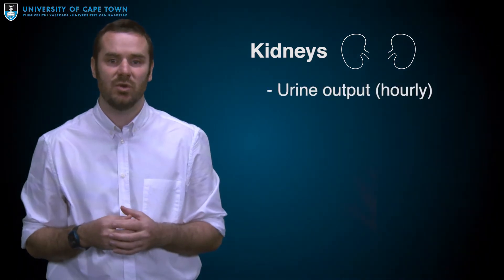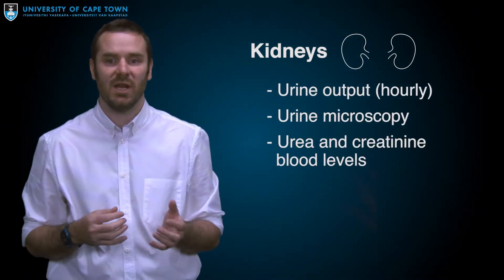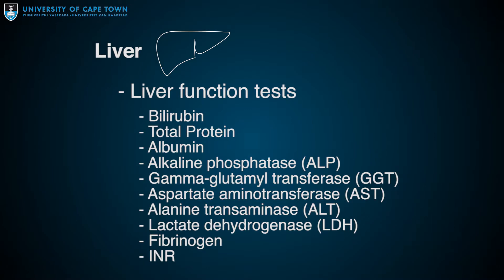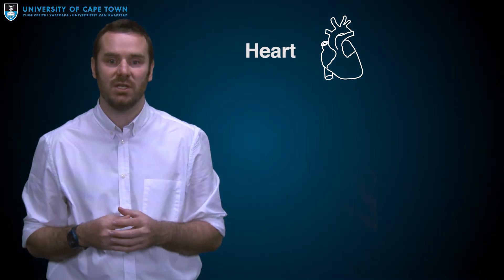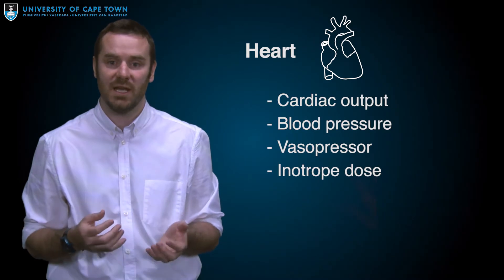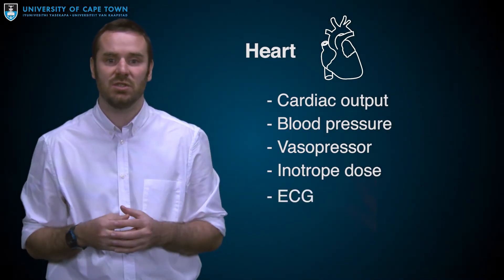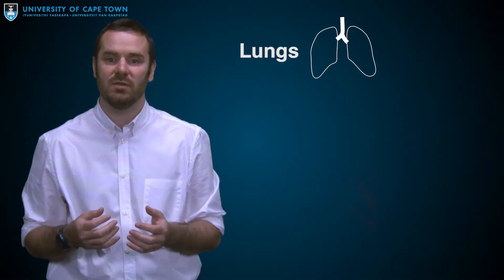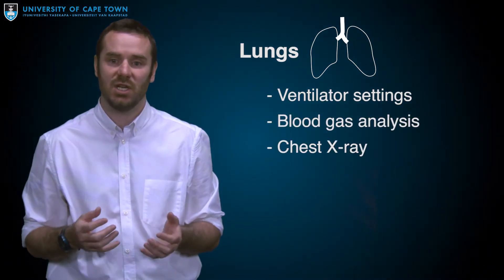A combination of clinical parameters, laboratory investigations and imaging modalities are used to assess each organ. Kidneys are assessed based on urine output, a microscopic analysis of the urine and blood levels of urea and creatinine. The liver is initially assessed based on the blood results of liver function tests. The heart is routinely assessed based on a combination of the cardiac output, the blood pressure, the amount of medical support required to maintain the blood pressure, and the presence of ECG changes or chest x-ray changes. Lungs are assessed based on a review of the ventilator settings, blood gas analysis and a chest x-ray.